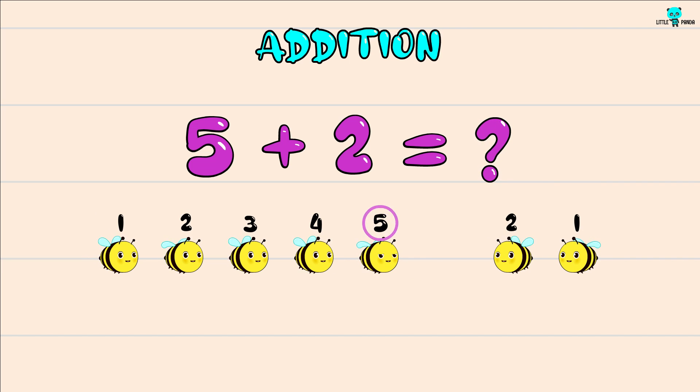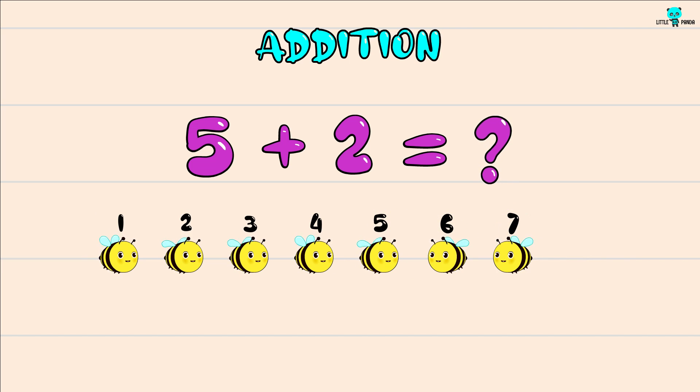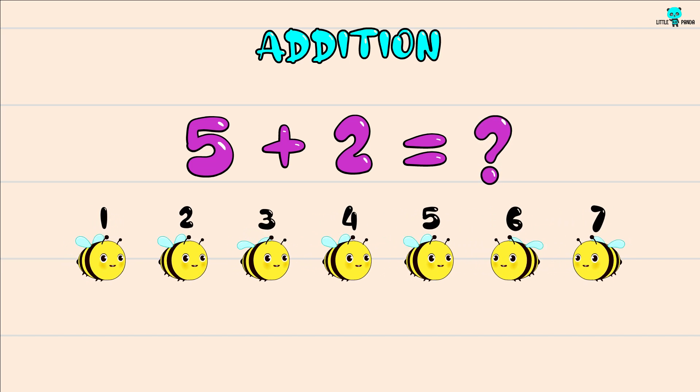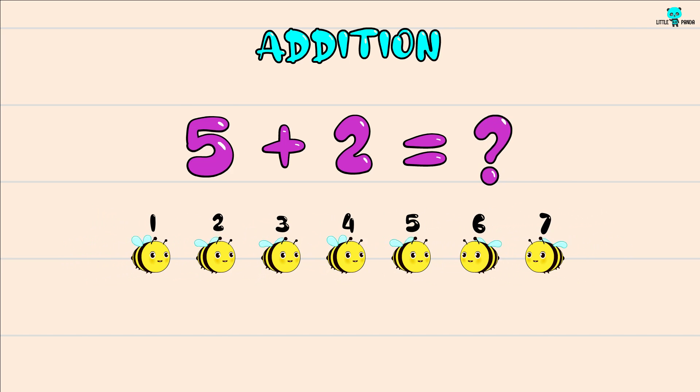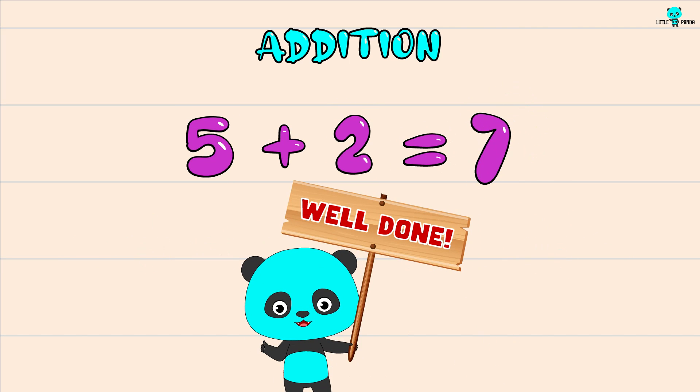Make 5, 6, 7. 7 honeybees. 5 plus 2 equals 7. Well done.